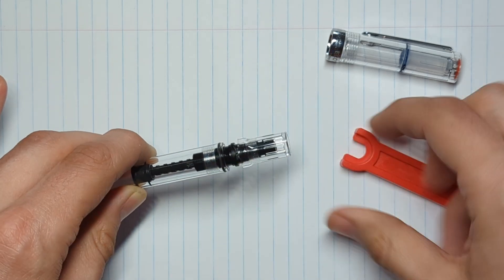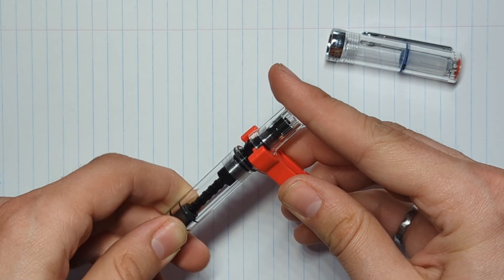Now we'll assemble the whole piece into the pen. Insert the wrench and hang on to it while you screw the body on.